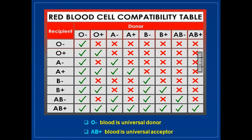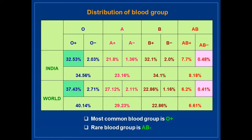In this compatibility table, you can see that O negative can donate blood to any other group — meaning no agglutination will occur. Similarly, AB positive can receive blood from any other group. Therefore, O negative is the universal donor and AB positive is the universal acceptor. The most common blood group is O positive at 37.43% in the world, and the rarest group is AB negative at 0.41%.